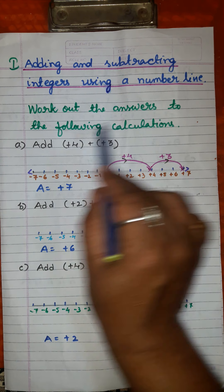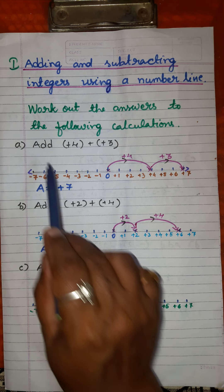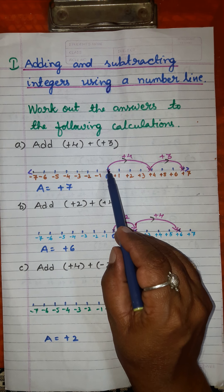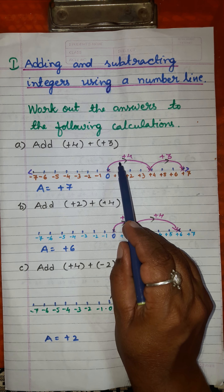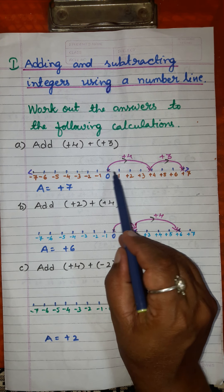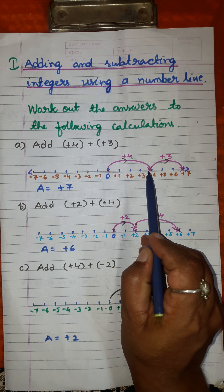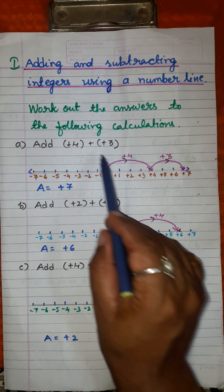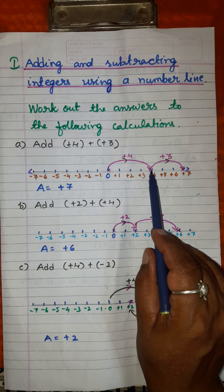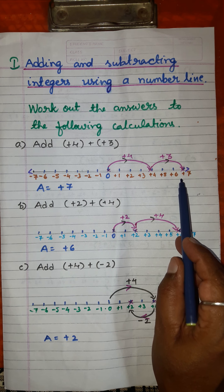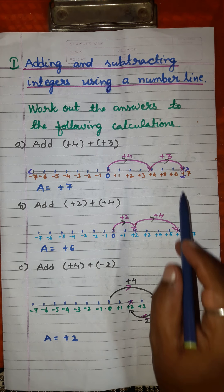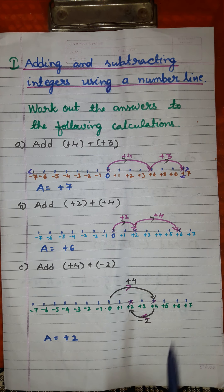Now we have to work out the answer to the first calculation: add plus 4 and plus 3. Starting from 0, moving to the right — plus 4, I move 4 units to the right. Again from point 4, I move plus 3, that is 3 more divisions to the right. Ultimately I land at the point 7. So the answer is plus 7.